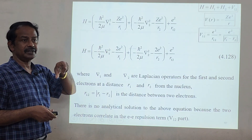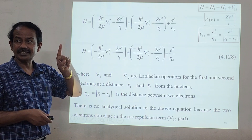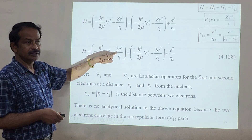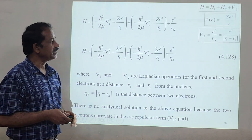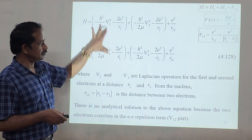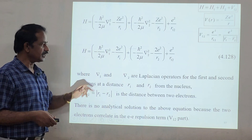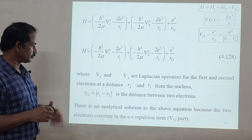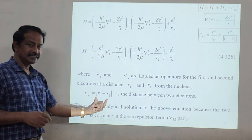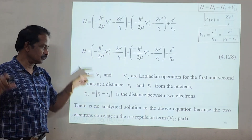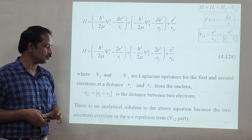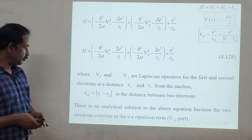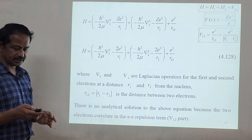For helium, Z equals 2, whereas for hydrogen Z equals 1. So we write −2e² / R1 and −2e² / R2 in the Hamiltonian. Here del1 and del2 are Laplacian operators, and R12 is the distance between the two electrons. There is no analytical solution to this equation because the two electrons are correlated through the electron–electron repulsion term.